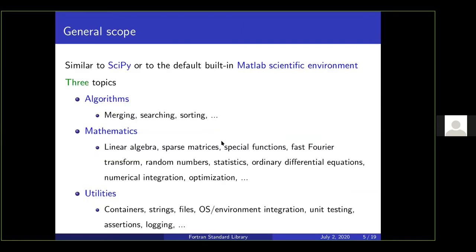The general scope of the Fortran standard library is similar to SciPy and the default burden of MATLAB's scientific environment. There are three main topics: first, algorithms — to merge, search, and sort arrays; second, mathematics — supporting procedures for linear algebra, sparse matrices, special functions, cubic root, fast Fourier transform, discrete steps, and statistics; and third, utilities — containers, strings, and file management.